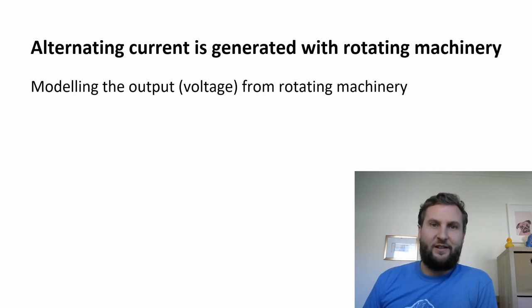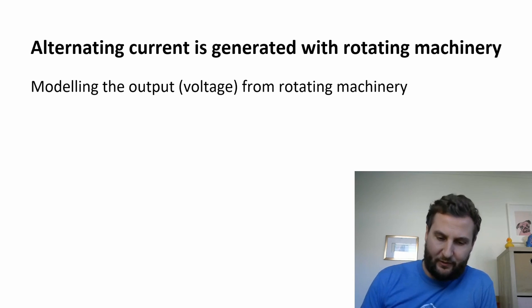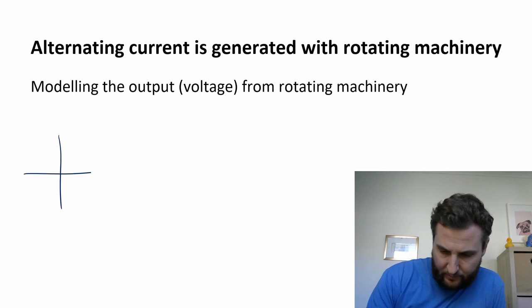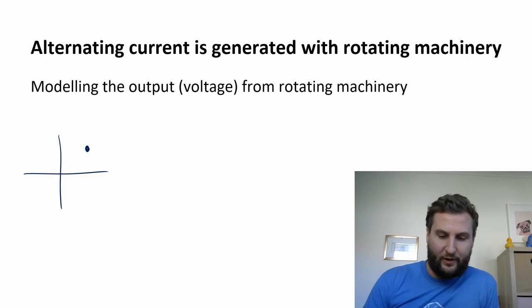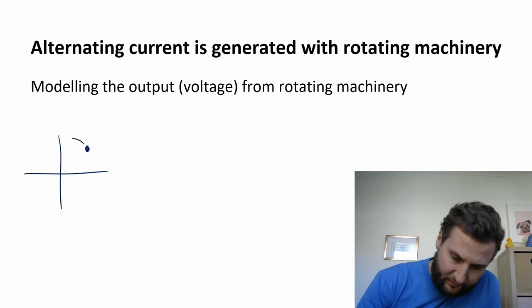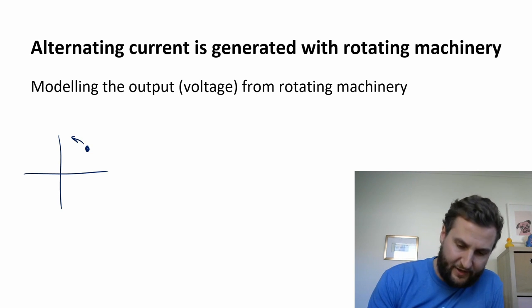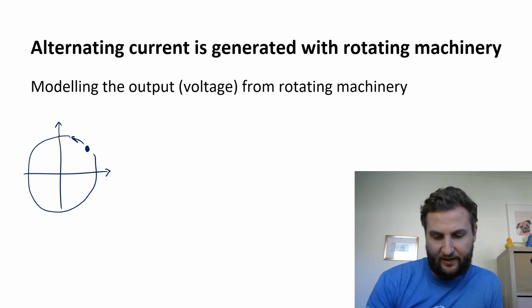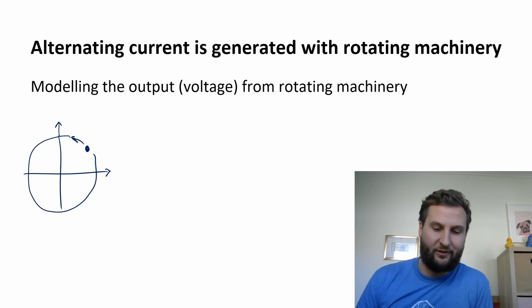Earlier I said that alternating current is generated using rotating machinery. So how does this work? Well let's sketch up something here and it's going to rotate. So let's have it rotate like this and we're going to track a path in a circle. And you can imagine this as an xy coordinate system or in three space.